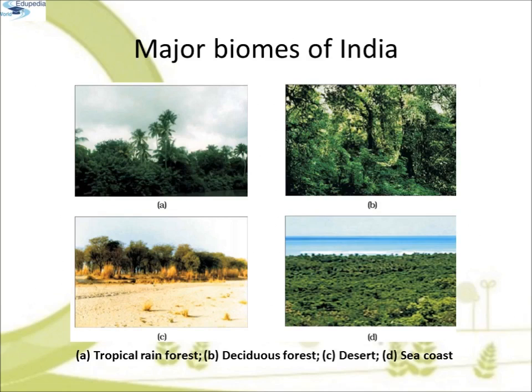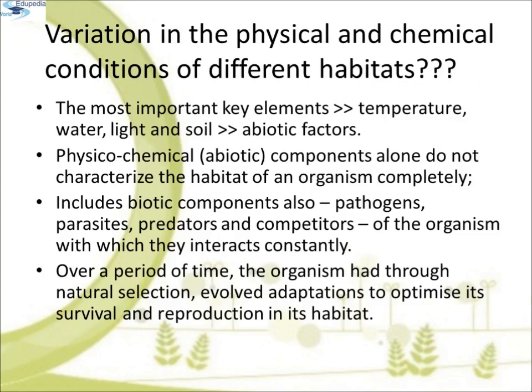These are the major biomes of India: the first is the tropical rainforest, the second is the deciduous forest, the third is desert, and the fourth is sea. The key elements that lead to variations in the physical and chemical conditions of different habitats are temperature, water, light and soil.